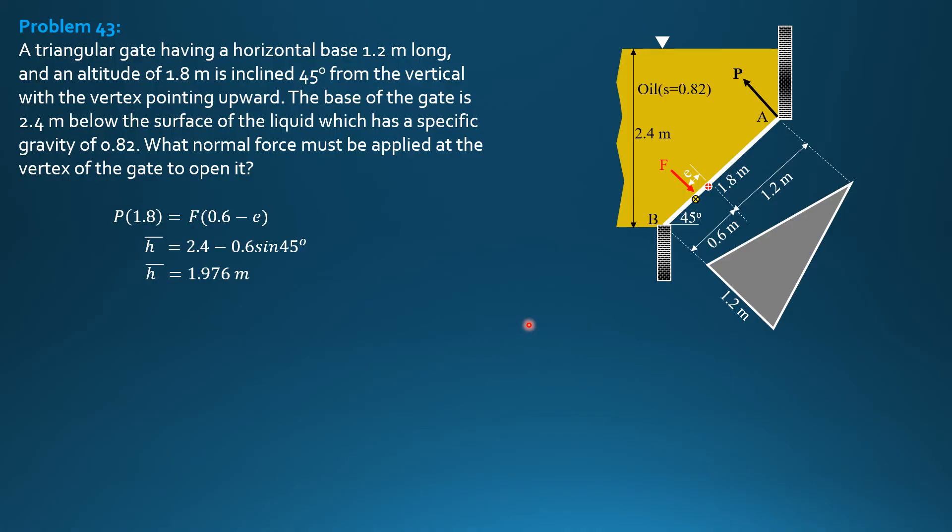Having found barred H, we can now compute F which is specific weight of oil, 0.82 times 9.81 times barred H 1.976, area 0.5 of 1.2 times 1.8. So F is 17.167 kilonewtons.